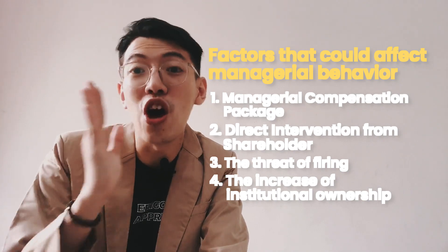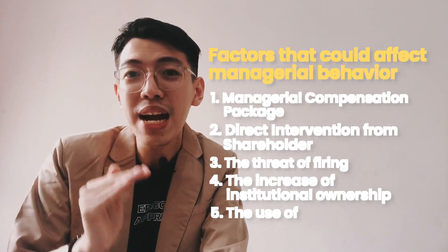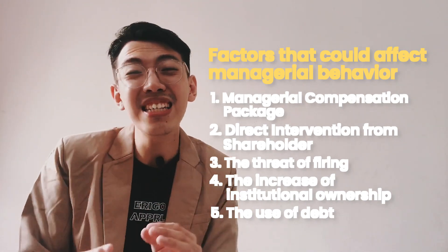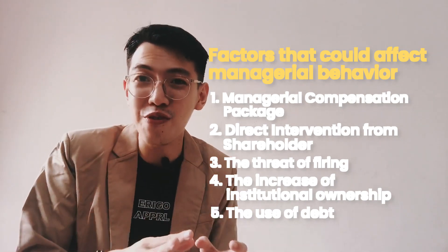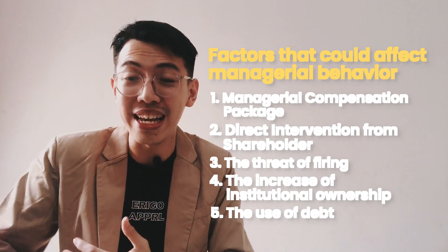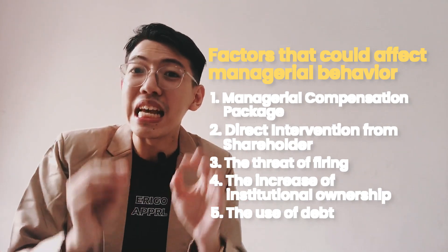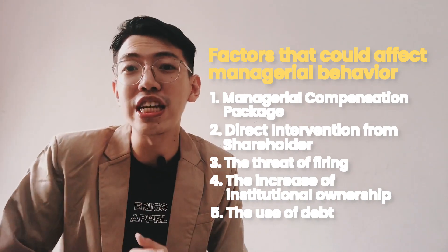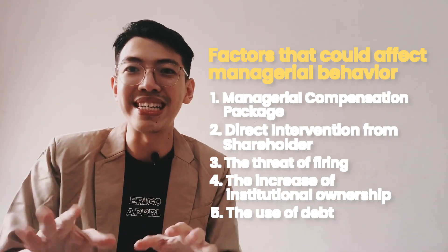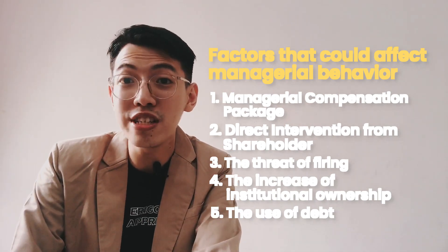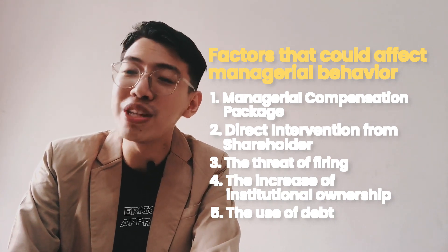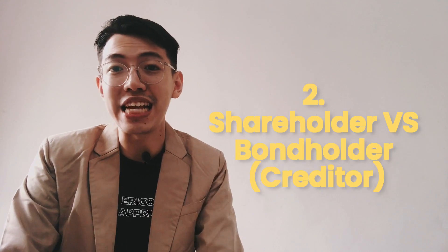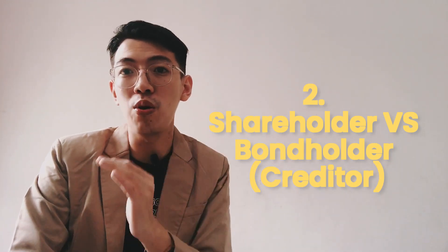The fifth factor is the use of debt. When a company uses debt, the manager or director tends to be more careful in spending money, because if the company cannot pay the debt, their position in the company is also threatened. That concludes the first type of agency problem between shareholder and manager or director.